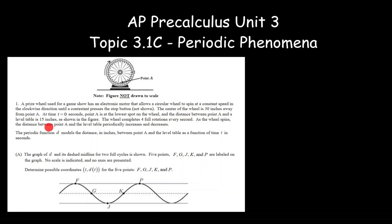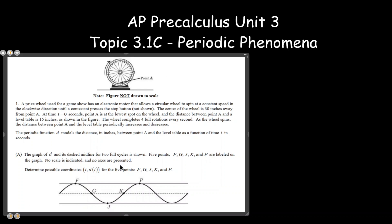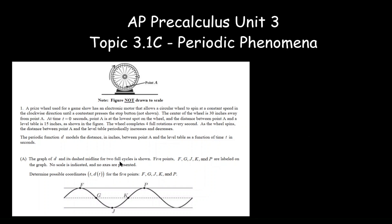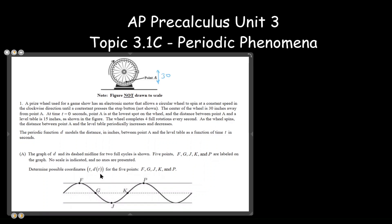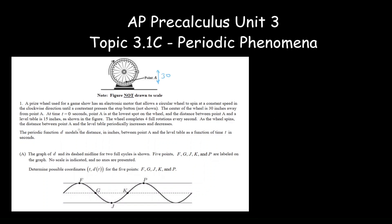So be careful here, this is given to us as 30. This is given to us as 30, and between A and the label table it is 15, so this is given to us as 15.